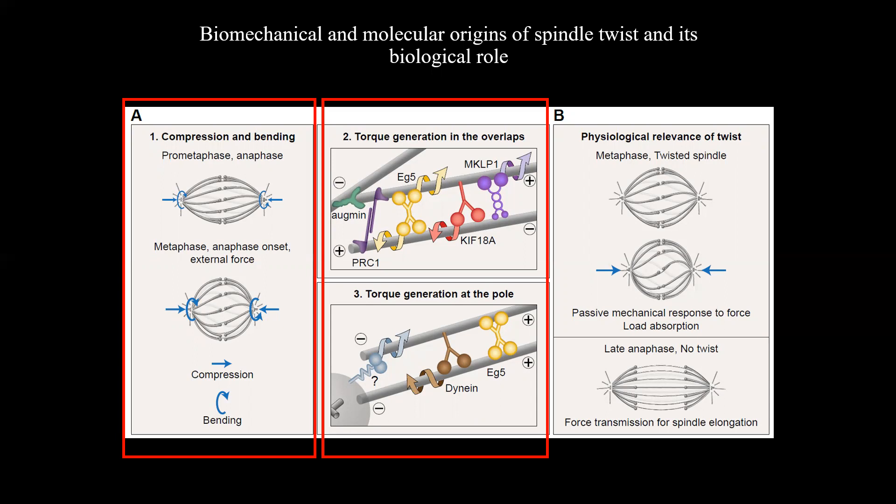We also propose that EG5, which also localizes in the pole region where it cross-links parallel microtubules, prevents their free rotation within the bundle and thereby promoting the accumulation of torsional stresses, though it may also actively generate torques at the pole.